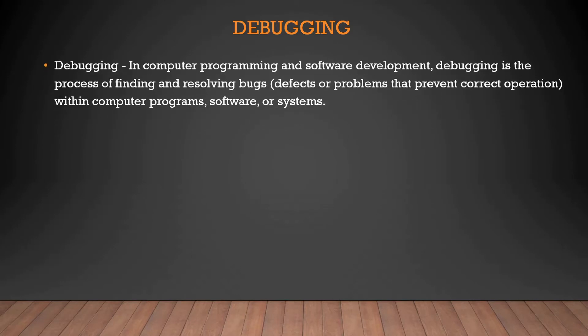According to Wikipedia, in computer programming and software development, debugging is the process of finding and resolving bugs — defects or problems that prevent correct operation within computer programs, software, or any kind of system.